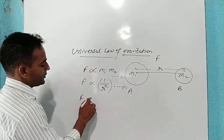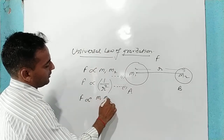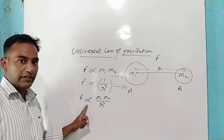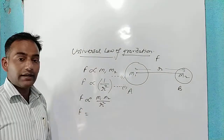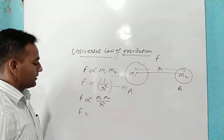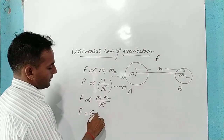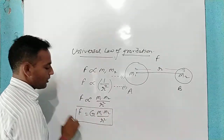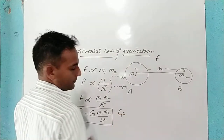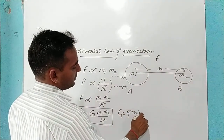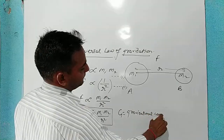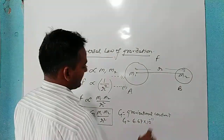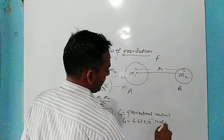If we combine these two proportionalities, F is proportional to M1 into M2 upon R square. Whenever we remove the proportionality sign, we write the equals sign and we need one constant. Here we will use the constant G. So F equals G times M1 into M2 upon R square. This is the universal law of gravitation, where G is called the gravitational constant. The value of G is 6.67 into 10 to the power minus 11 Newton meter square per kg square.